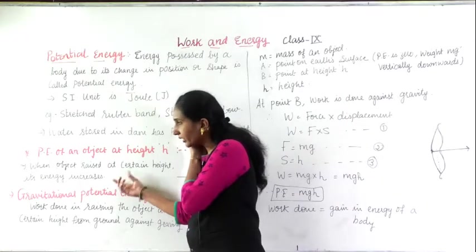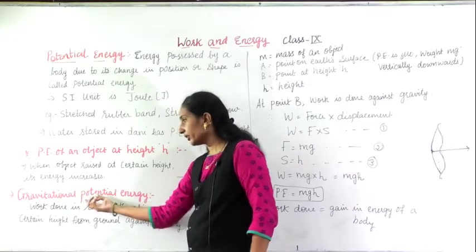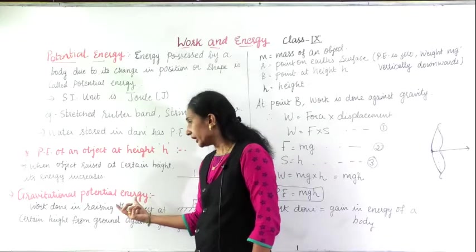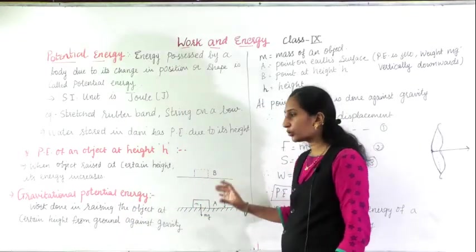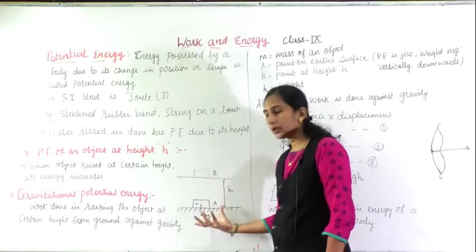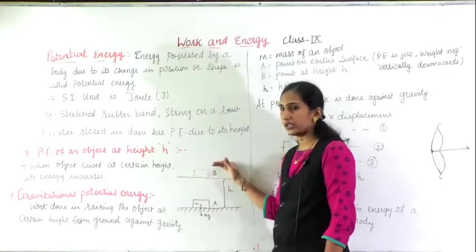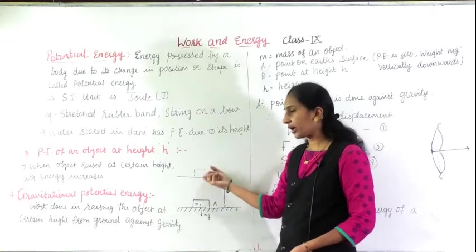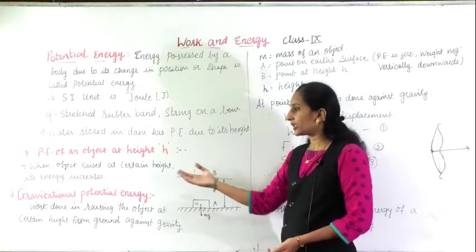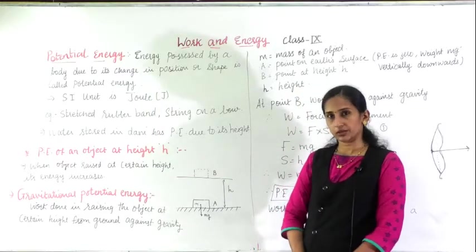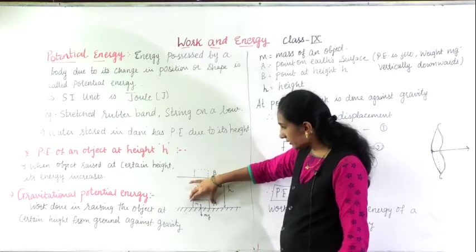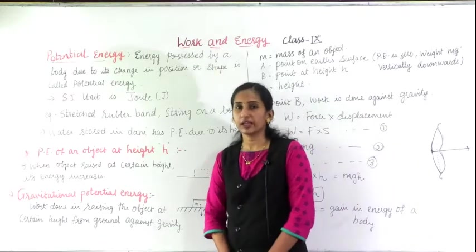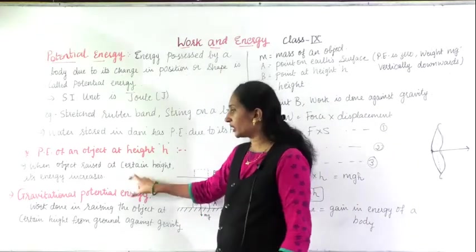Now, one more concept: gravitational potential energy. It is the work done in raising an object — as I told you, I am raising the object at a certain height from the ground, and it is against the gravity. That is called gravitational potential energy. It is potential energy, but it is gained against the gravity, that is why it is called gravitational potential energy. Work done in raising the object at certain height from the ground against the gravity is called gravitational potential energy.